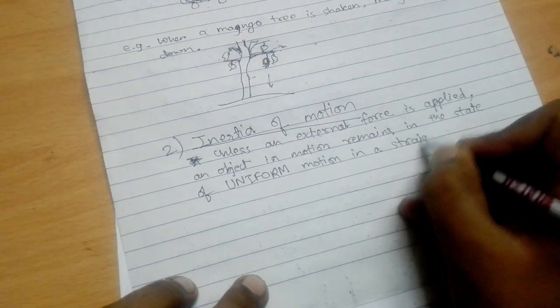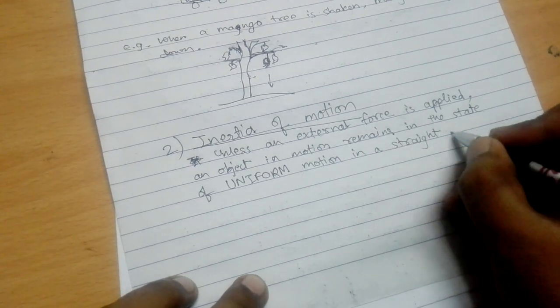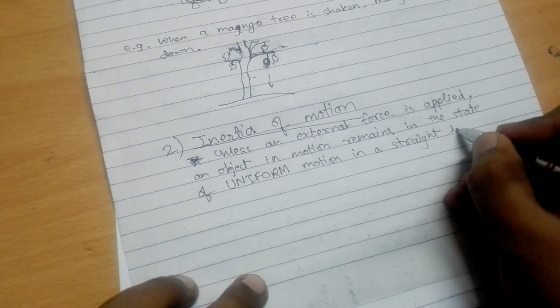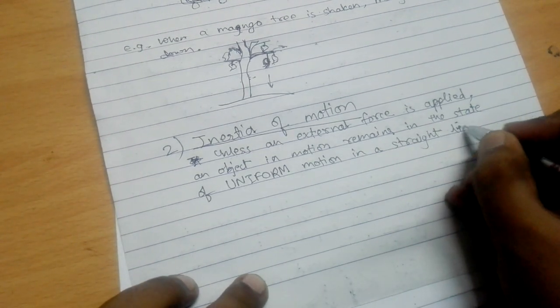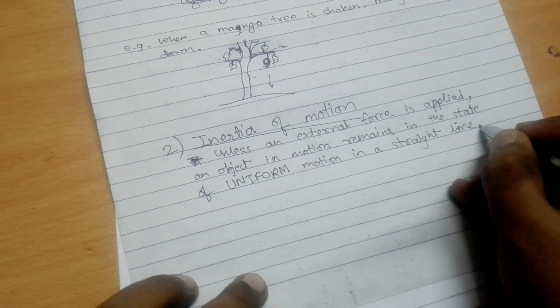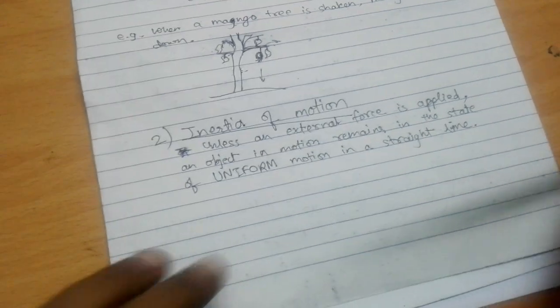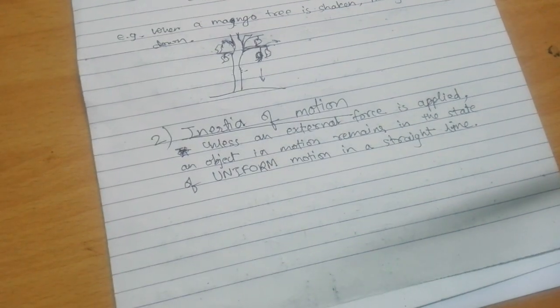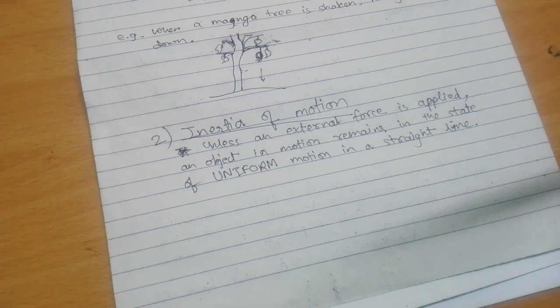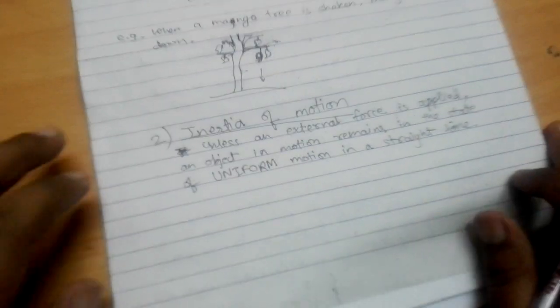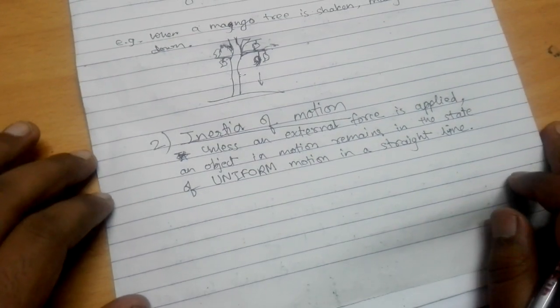When a moving bus suddenly stops, standing passengers inside the bus tend to fall forward due to inertia of motion. As the bus stops, the lower part of their body comes to a stop along with the floor of the bus. But the upper part of the body tends to remain in motion due to inertia of motion. Hence the passenger falls forward.